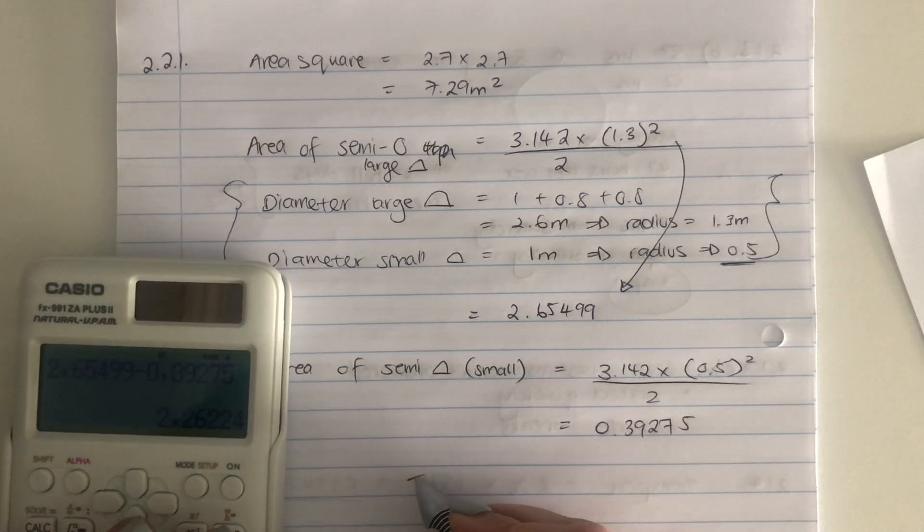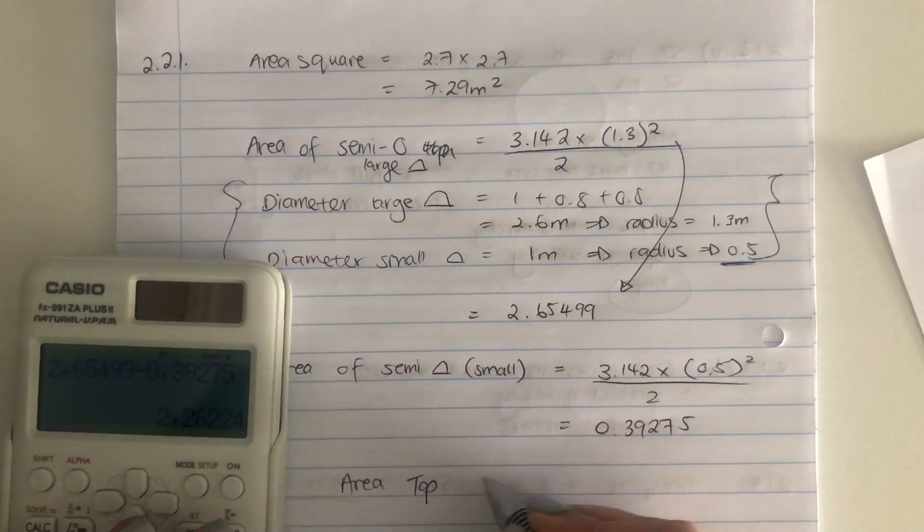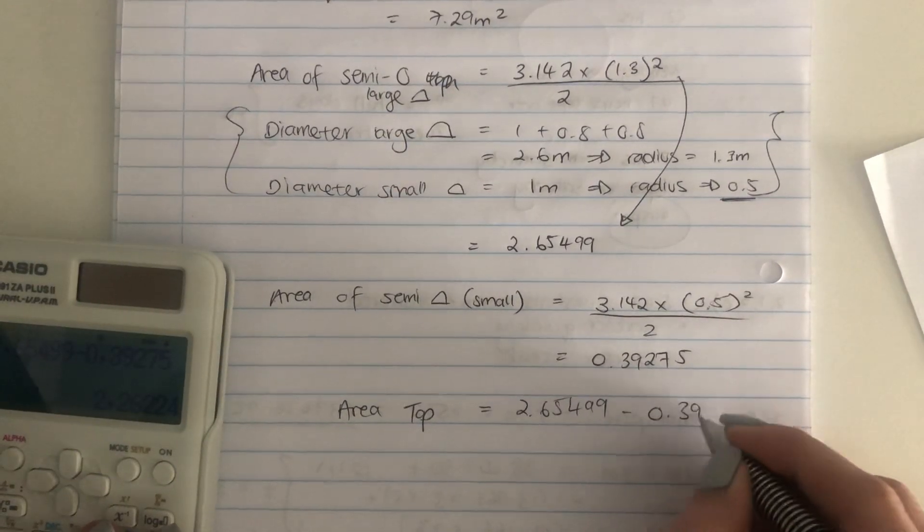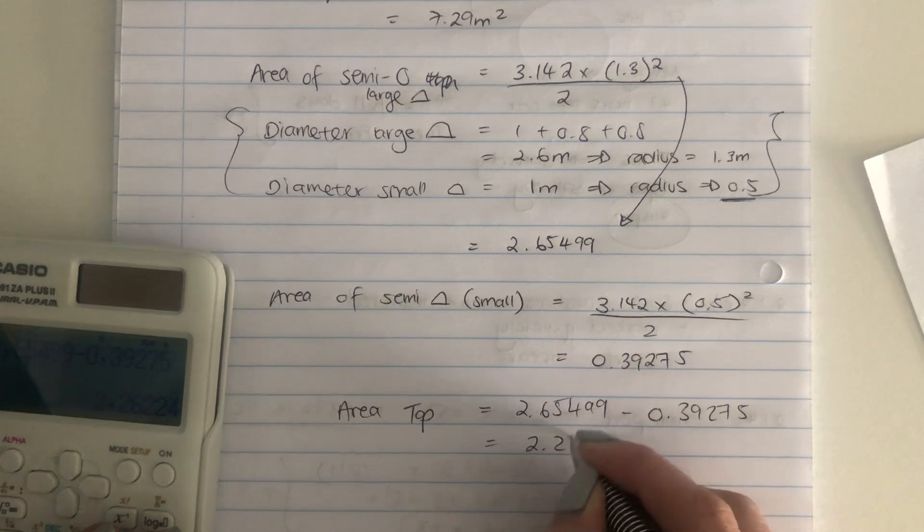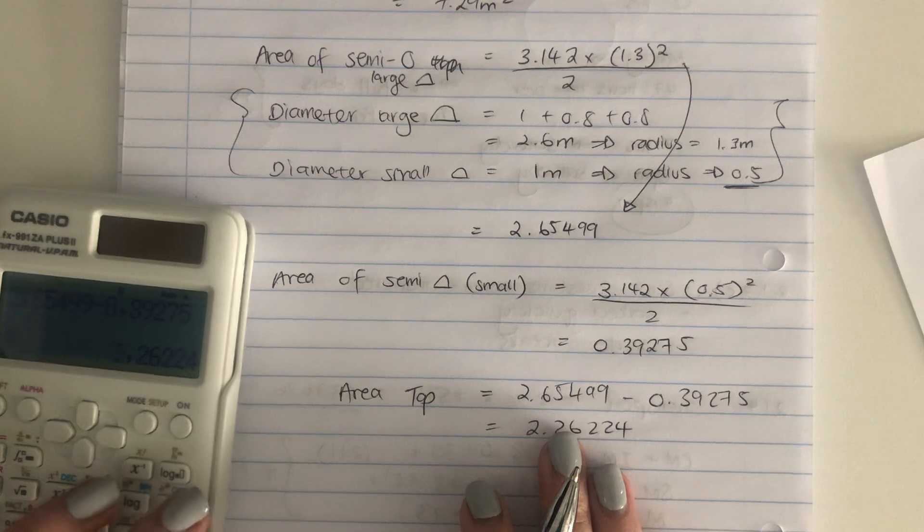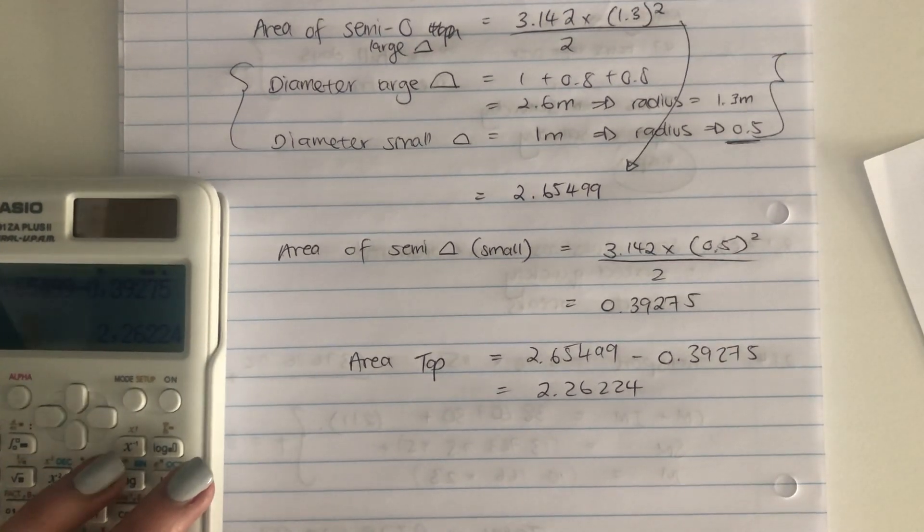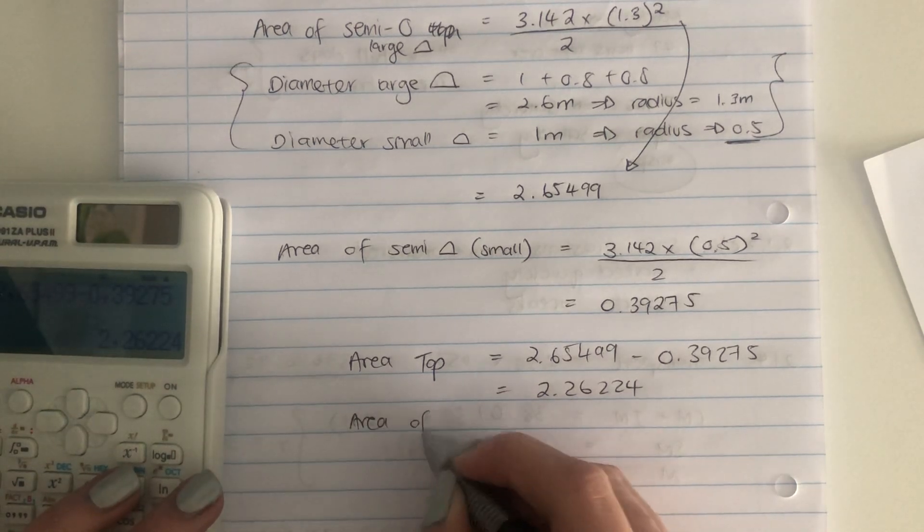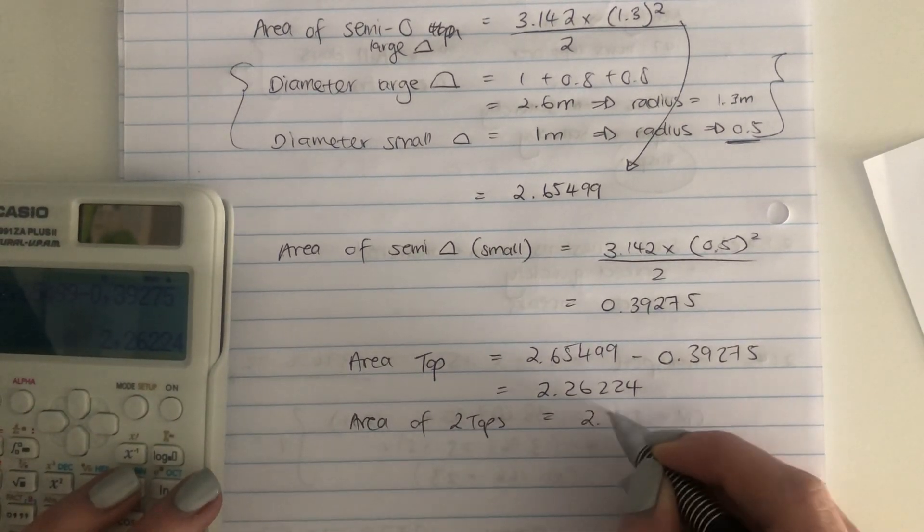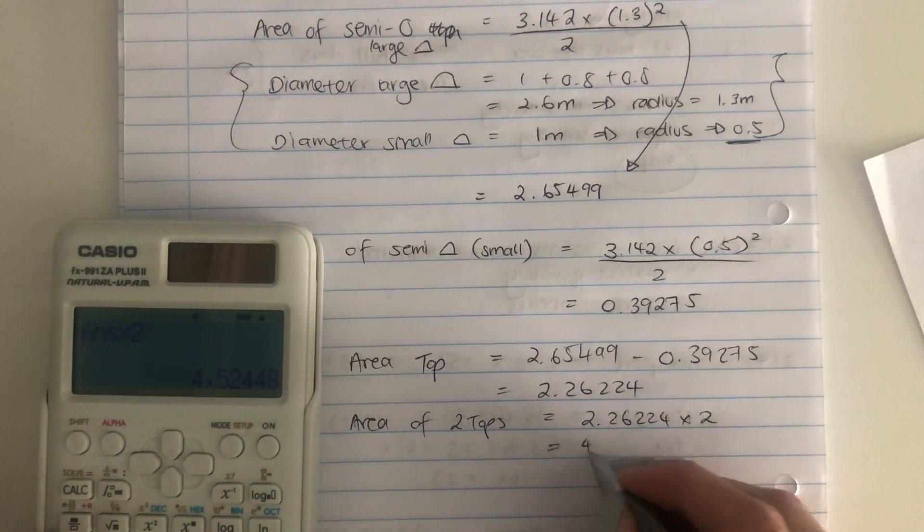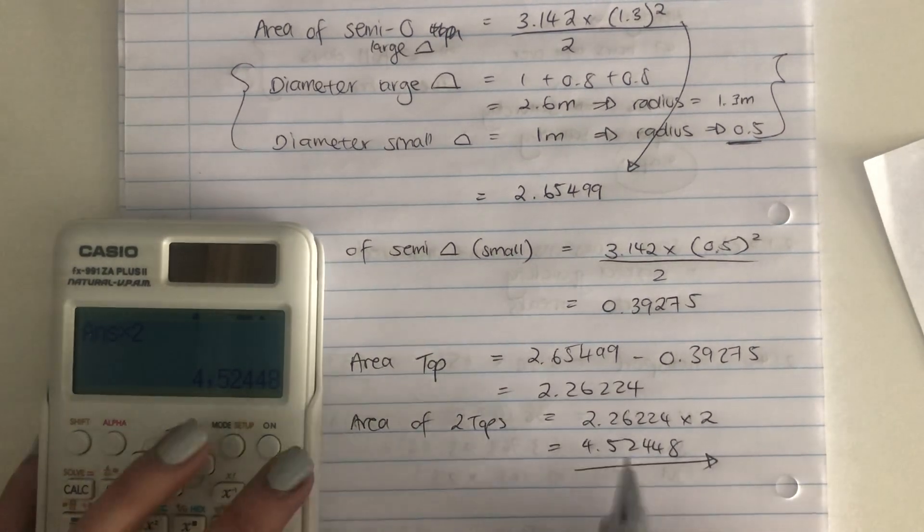Now the area of the tabletop, so area of the top would be the 2.65499 subtract from it the area of the small semicircle, which is 0.39275, equals 2.26224. Just a note here on rounding. Don't round off until you've finished. If you round off in your workings, you run the danger of rounding off, and then your answer being quite significantly different to what it should be. So only round off at the end. So that's the area of 1. So what would be the area of 2 tops? 2.26224 times by 2, so times it by 2, and then it'd be 4.52448.